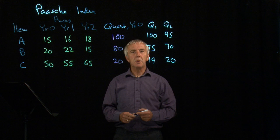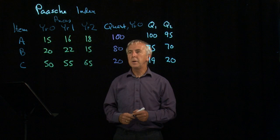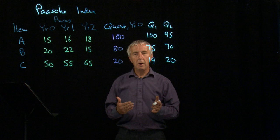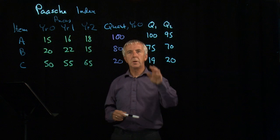Another way of finding a combined price index when we have a lot of different items to combine is called the Paasche Index, after another statistician. This one is more up to date because it uses current quantities of items. The Laspeyres Index uses the amount of items that were sold in year zero and sticks with that, whereas the Paasche looks at the quantities sold in the relevant years.